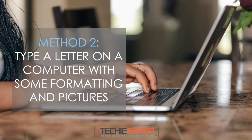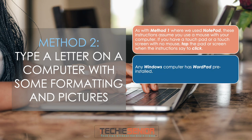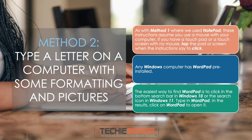Method 2: Type a letter on a computer with some formatting and pictures. As with Method 1, these instructions assume you use a mouse with your computer. If you have a touchpad or touchscreen with no mouse, tap the pad or screen when the instructions say to click. Any Windows computer has WordPad pre-installed. The easiest way to find WordPad is to click in the bottom search bar in Windows 10, or the search icon in Windows 11, type in WordPad, then click on WordPad to open it.